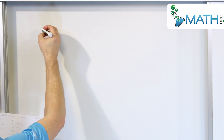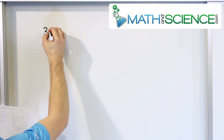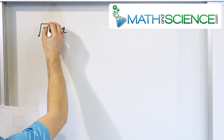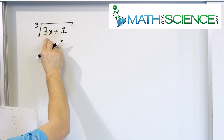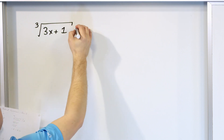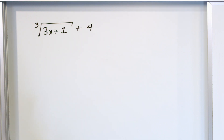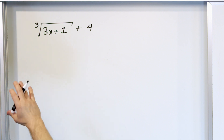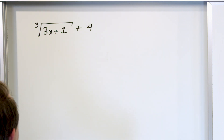Here's an equation for you, something that you wouldn't see early on in algebra, but now that we have the tools, it's not so bad. Here's a cube root of some quantity, 3x plus 1, and on the right-hand side it's equal to 4. This is different because it's a cube root, but it's the same kind of idea. To undo a cube root, you have to do a cubing operation.